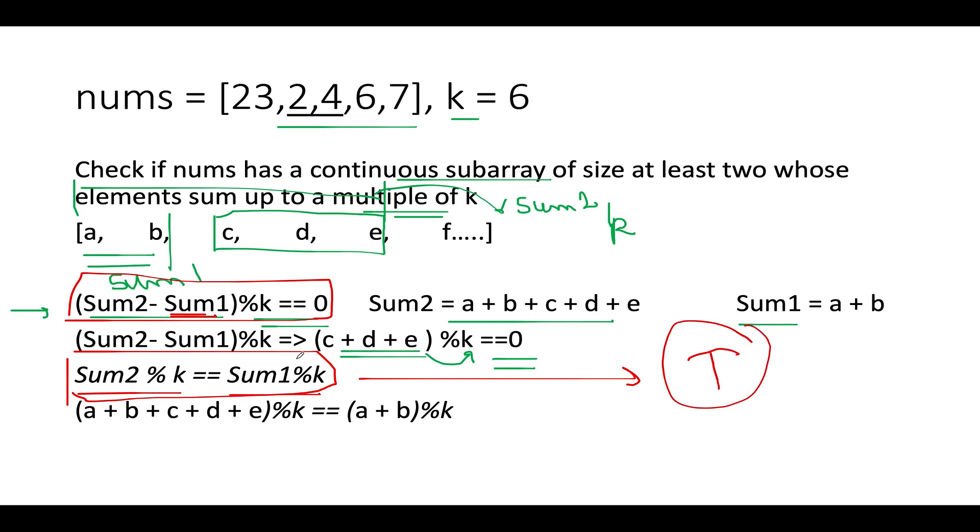So we look out for the possibilities where the prefix sum while moving across this entire array gives you the same remainder that you have already seen in the past. If it occurs then it becomes a happy case. We will return true in those cases. Otherwise we will return false.